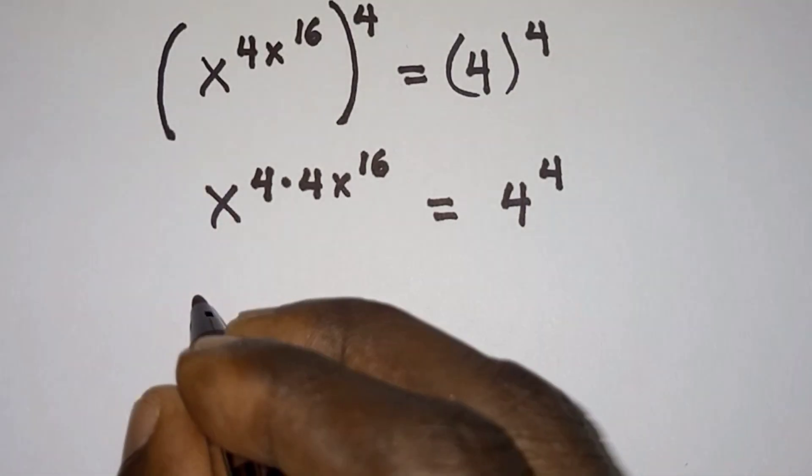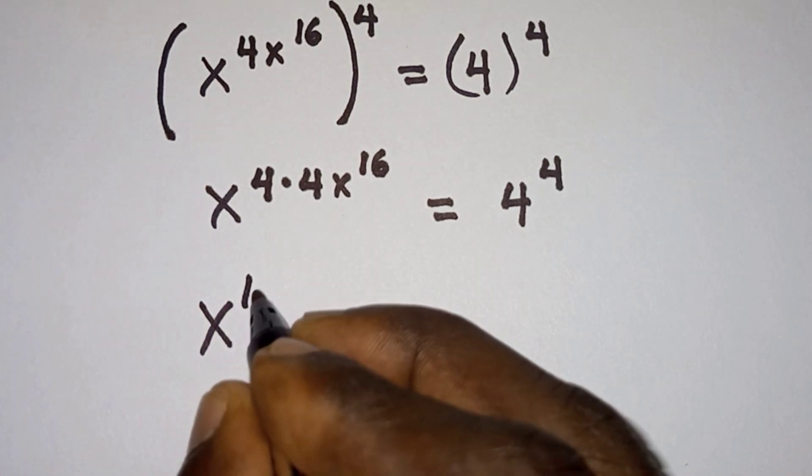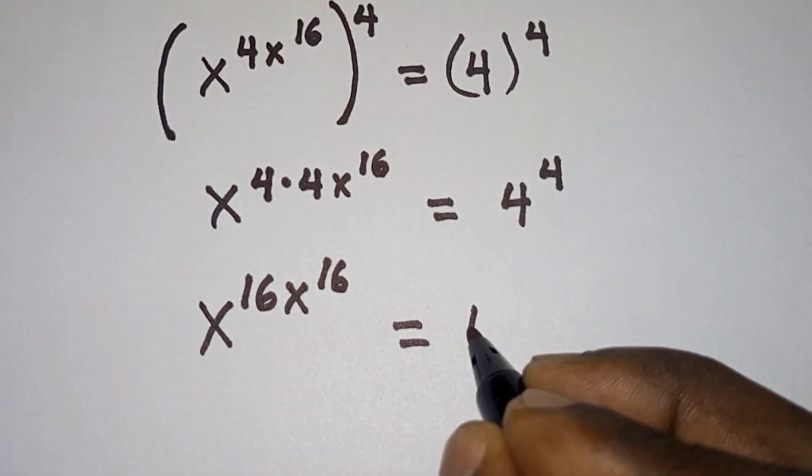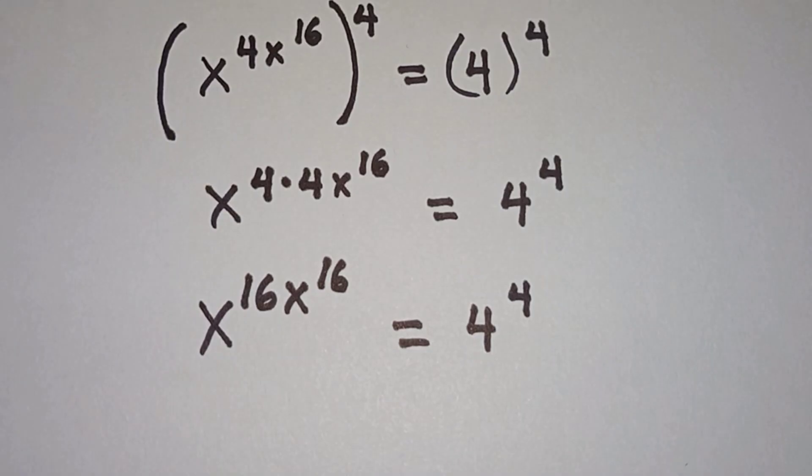Then we will simplify this further. We have x to the power 16 times x to the power 16 is equal to 4 to the power 4.